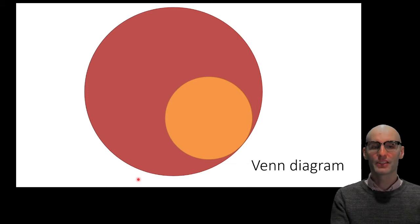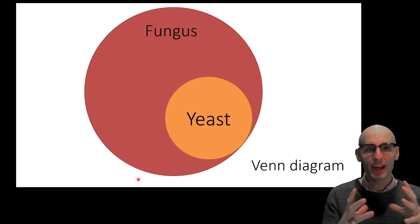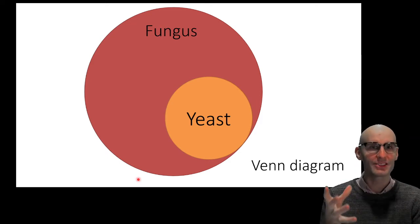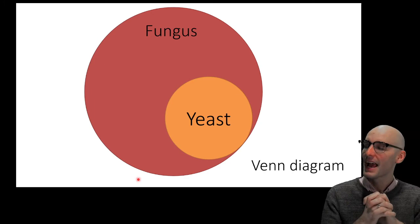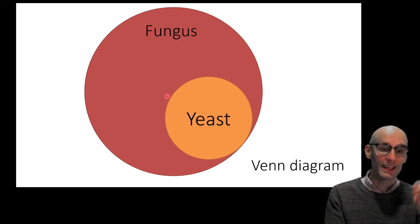So fungus can be sort of broken up into fungus. But within fungus is yeast. So yeast is fungus. When you're drinking beer, you're drinking a fungus drink, which is kind of weird. And so this would be the Venn diagram. All yeasts are fungus, but not all fungus are yeasts.